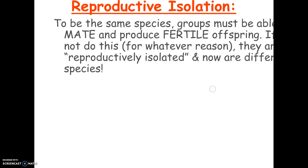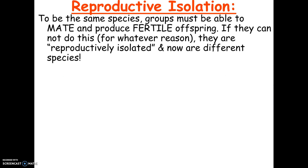When organisms become separated from one another to the point where they can no longer mate, they are considered separate species. The definition of a species is that you have to be able to mate and make fertile offspring. If not, you are reproductively isolated. You don't have to be physically separated — if your genes can't mix, you are separate species.